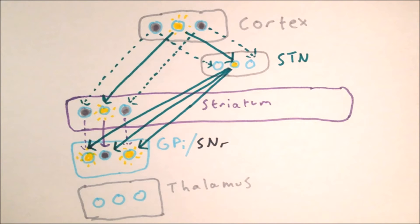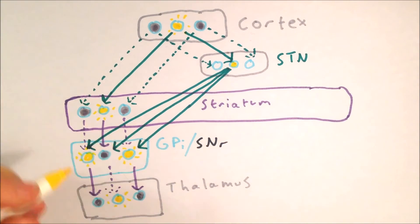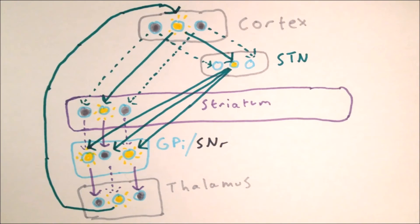The firing patterns of the output nuclei are therefore reversed, and the middle loop has the lowest firing rate. This means the inhibition to the thalamus is reduced, and the thalamus is able to excite the cortex corresponding to the middle loop, and the appropriate action is selected. In contrast, the other loops still maintain high levels of activity in their output nuclei, leading to a high level of inhibition in the thalamus and preventing their loops from activating the respective areas of the cortex.